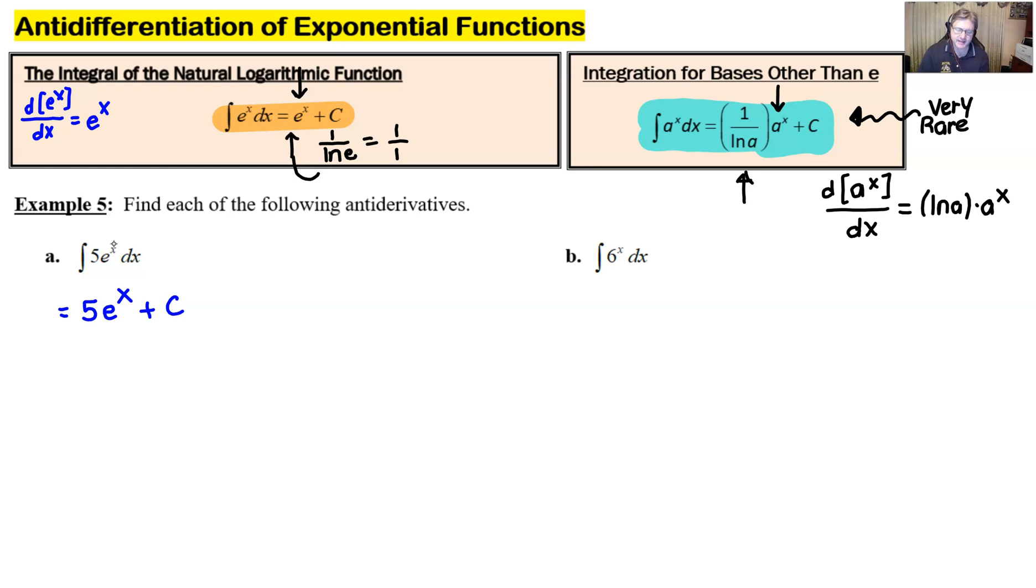If we look at problem 6, now when you integrate 6 to the x, we want to recognize that the a is 6. So what that means is that we have 1 over the natural log of that 6, which is a very ugly irrational number that we're not going to really worry about. Remember, the natural log of 6 is just asking yourself, what power do you raise e to to get 6? And e is this irrational number 2.71, etc., etc., etc. And then we multiply that by a to the x, which in this case is 6 to the x, add your plus c, and you're done. Nothing more needs to be tacked on or modified.